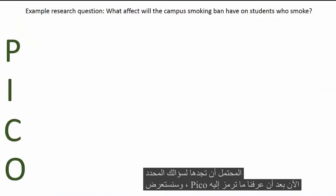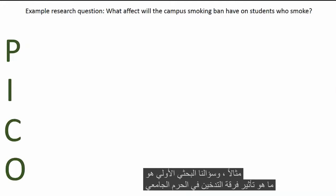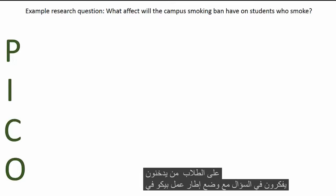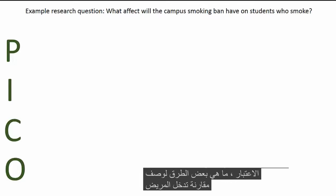Now that we know what PICO stands for, we'll be going through an example. Our initial research question is: what effect will the campus smoking ban have on students who smoke? Think about the question with the PICO framework in mind. What are some ways to describe the patient, intervention, comparison, and outcome?